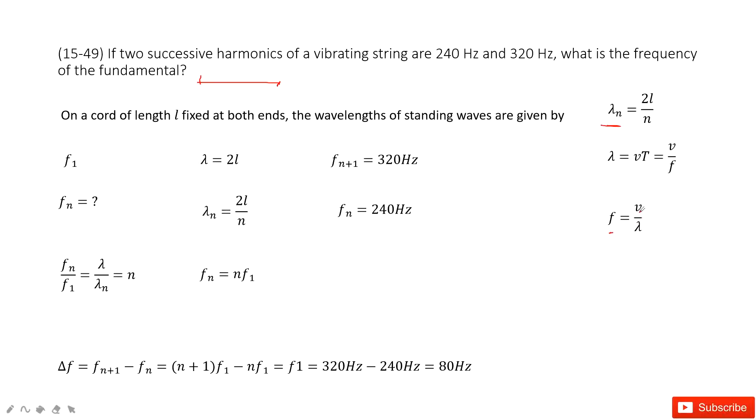And for the same string, the same wave, v is constant. So if we find fn over f1, so f1 is the fundamental frequency, fn over f1 just equals lambda 1 over lambda n from this equation. Because v is constant, you can see f is proportional to 1 over lambda. So we get this function.